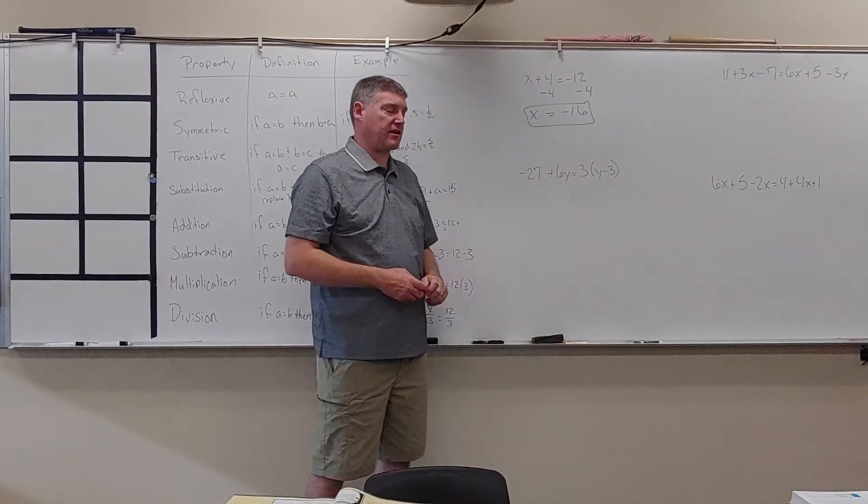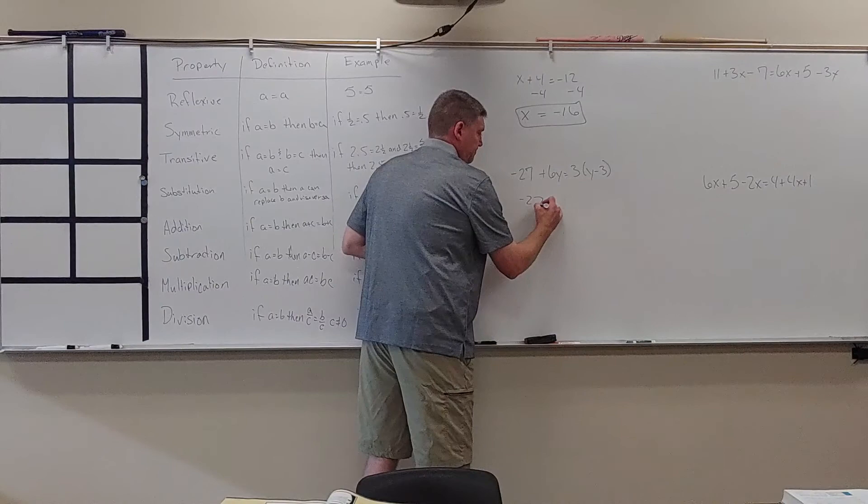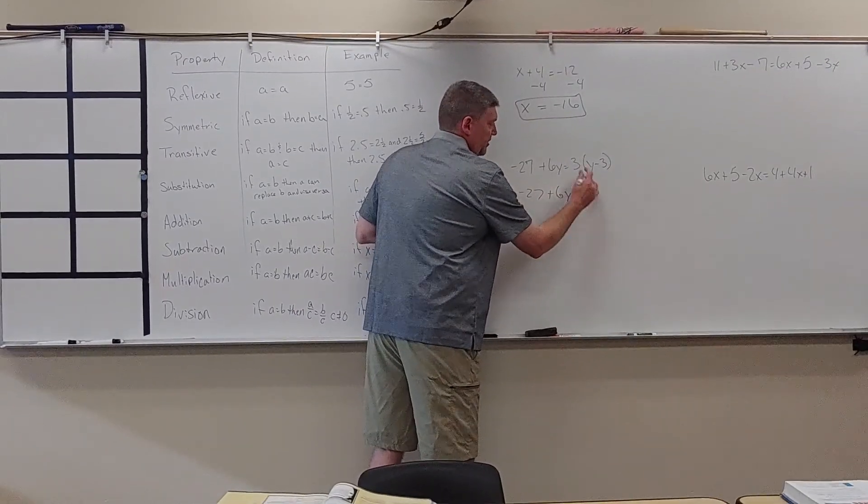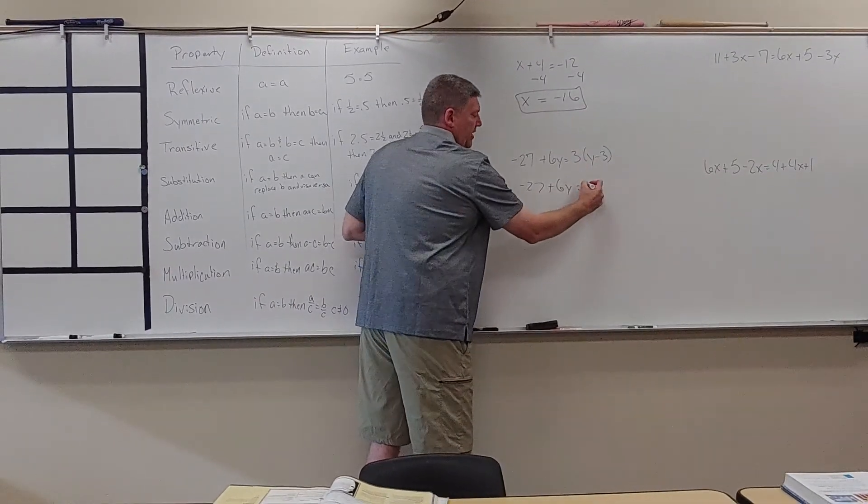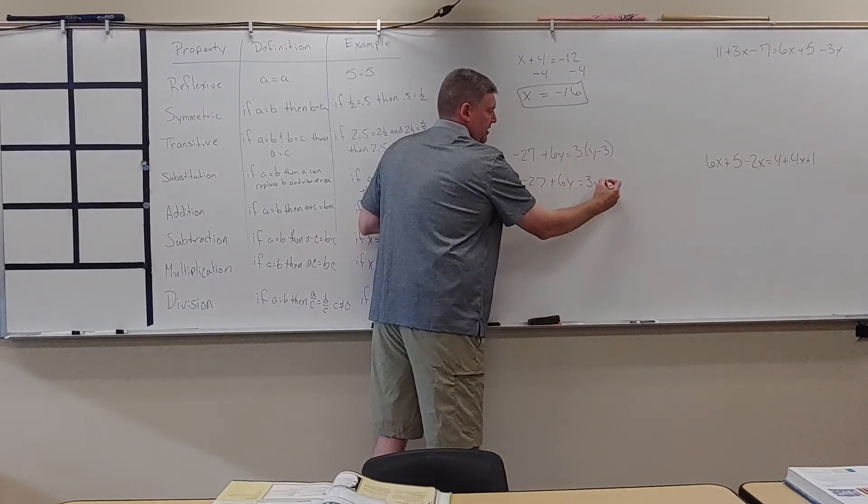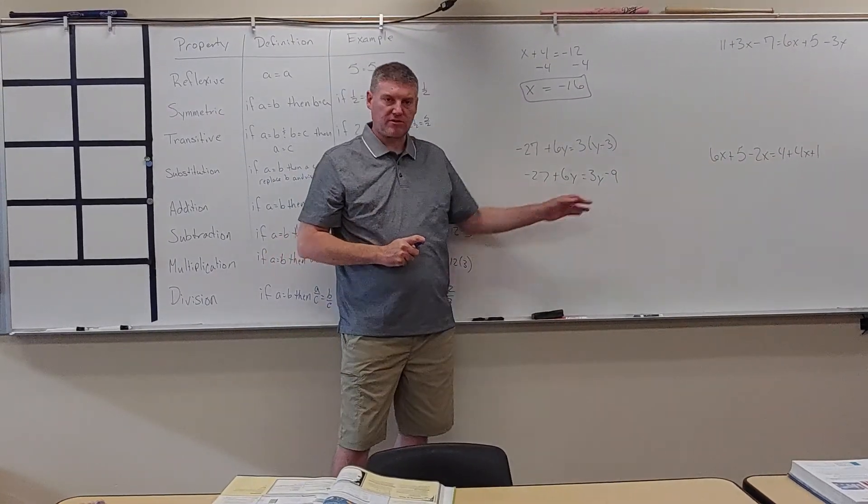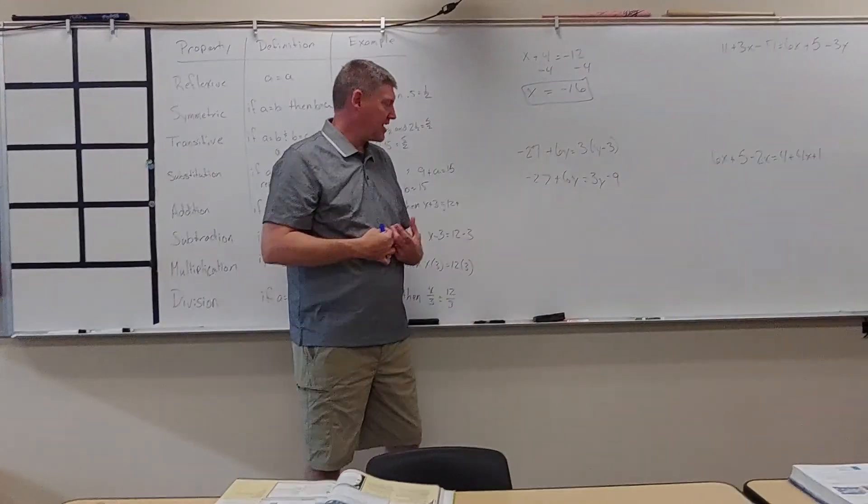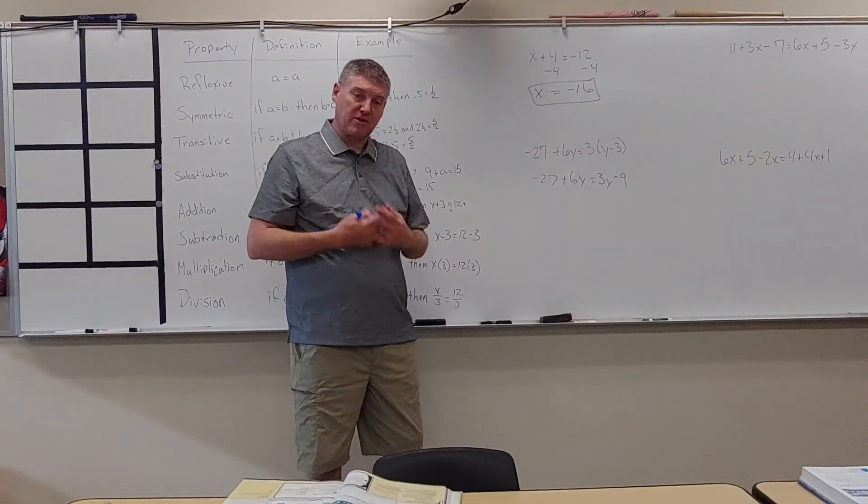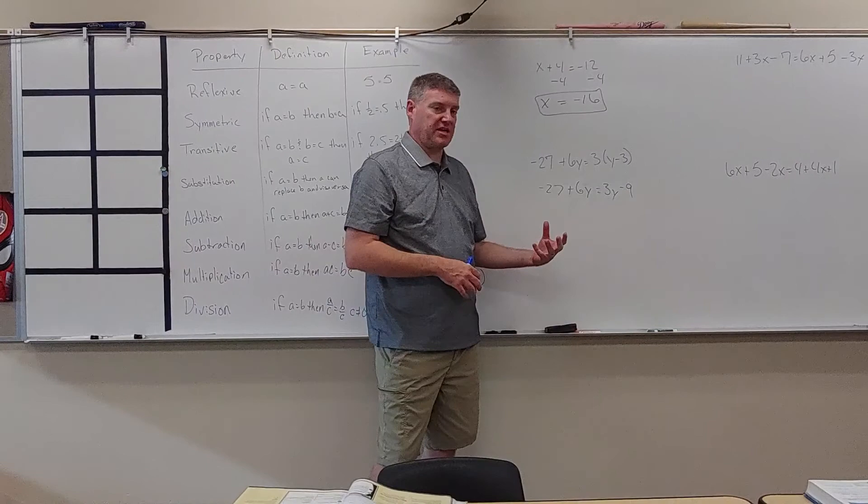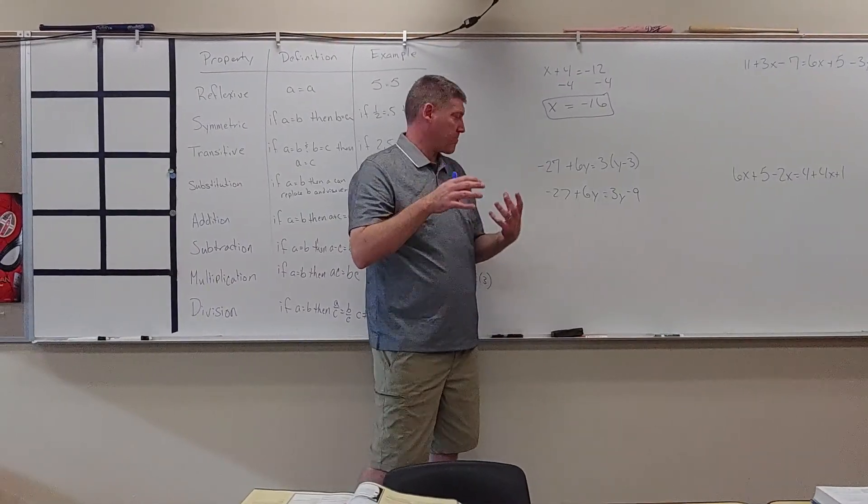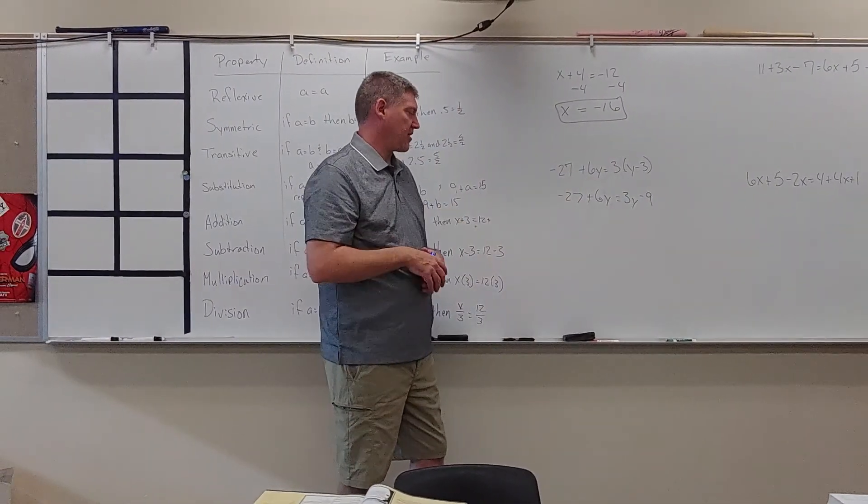I'm going to take 3 and multiply it by Y to get 3Y. 3 times negative 3 is negative 9. Now, I still have variables on both sides. Personally, I like to move my variables first just because then I don't get messed up and have a negative variable or something like that.